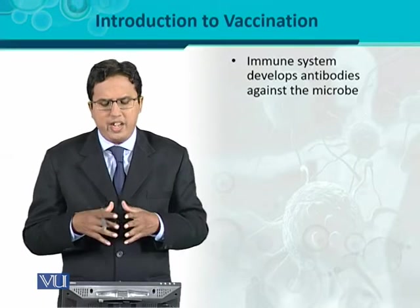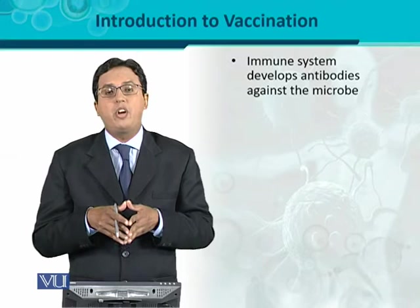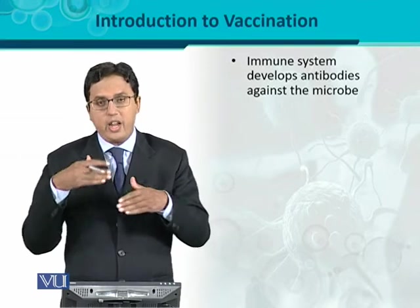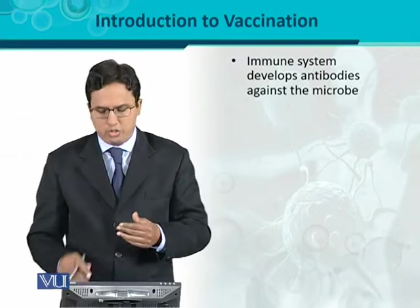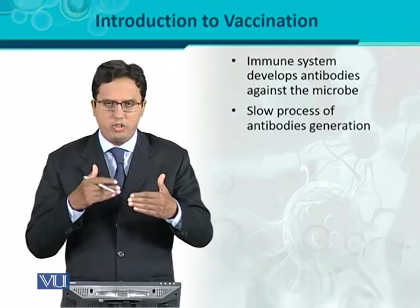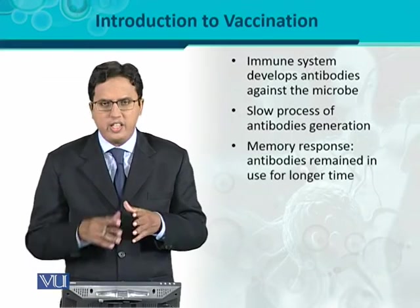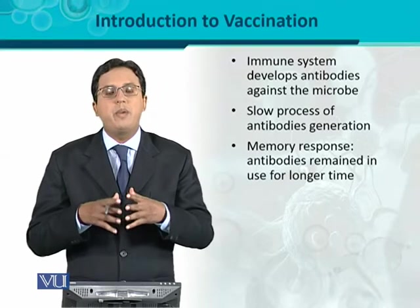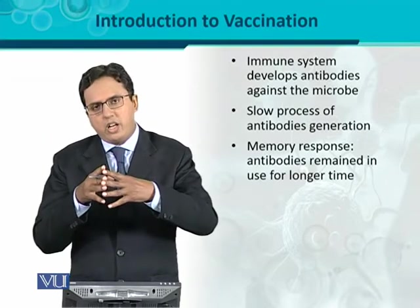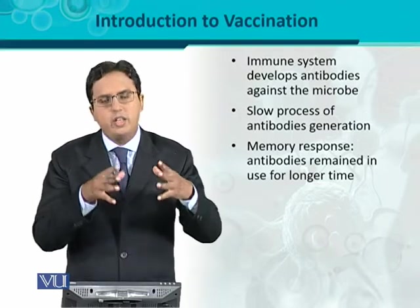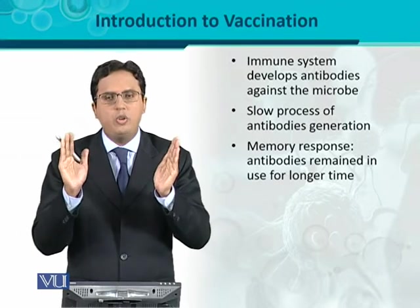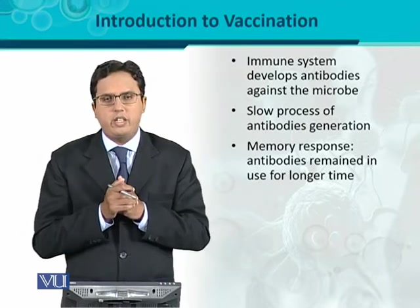The immune system develops antibodies against the microbes — the antigens that enter the body will activate the immune system so that antibody generation occurs. This would be a slow process of antibody generation; they develop gradually. There is another important aspect: the memory response. The memory response will come, and antibodies remain in the blood or body for a longer time. If there is a next exposure to that antigen or pathogen, antibodies will already be there, and that memory can protect against such a pathogen.